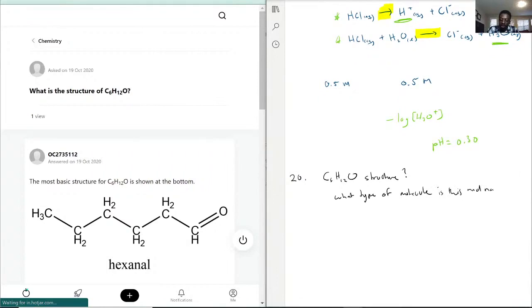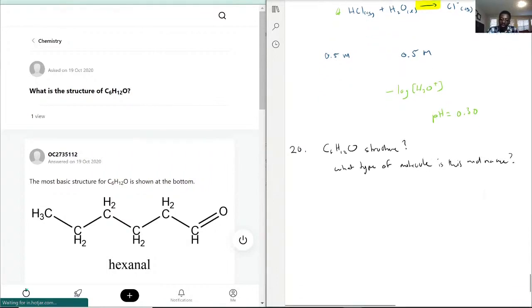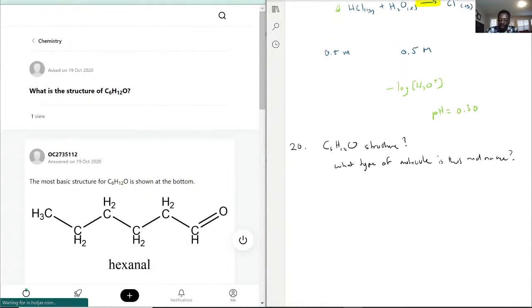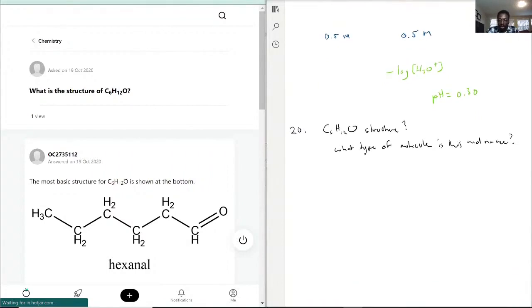And name, although they give the name as well from the answer. But the way you want to draw this out, you want to start with your carbons and hydrogen. So C6... okay so that's C6 right there. And the way it works is that you want to make sure that